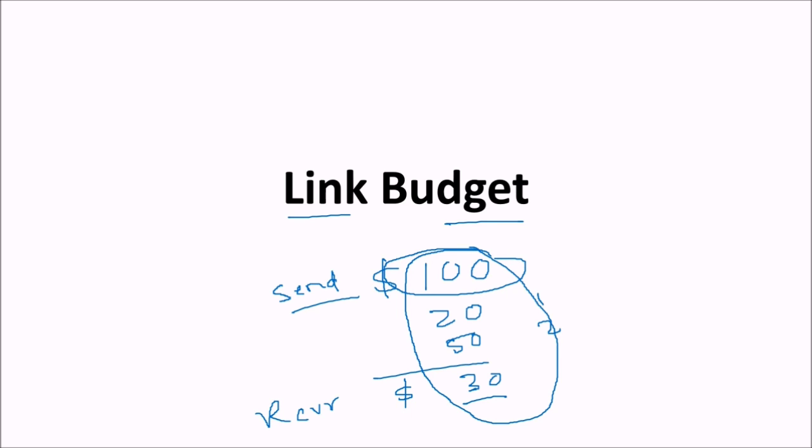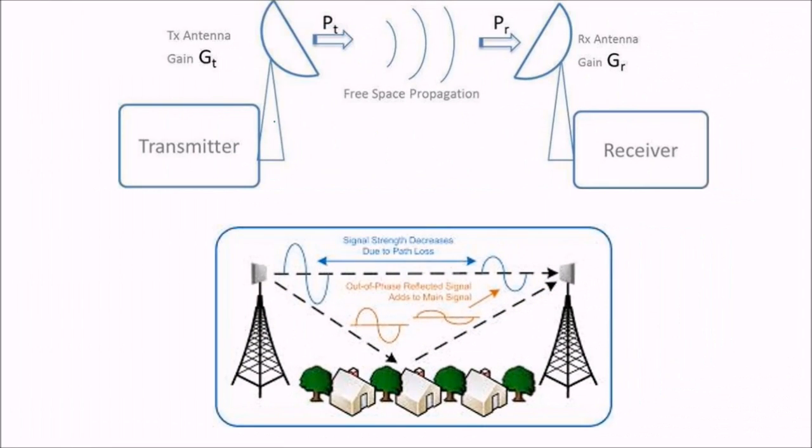The send power minus all the losses and the receiver, this is the link budget. This is the transmitted TX antenna, this one is the receiver antenna RX. Power transmitted PT, power received PR through unguided media or free space propagation. Transmitter sends with some gain GT, and receiver receives with gain GR. In this sequence, some signal strength decreases due to power loss, some out of phase reflected signals may add to the main signal.